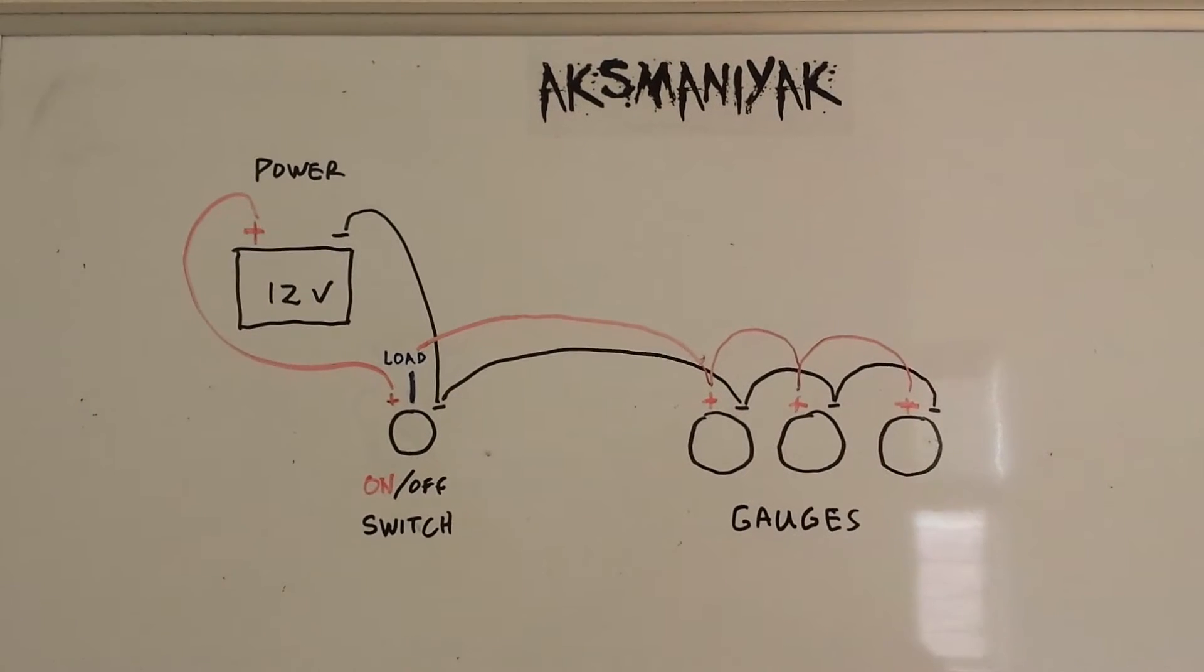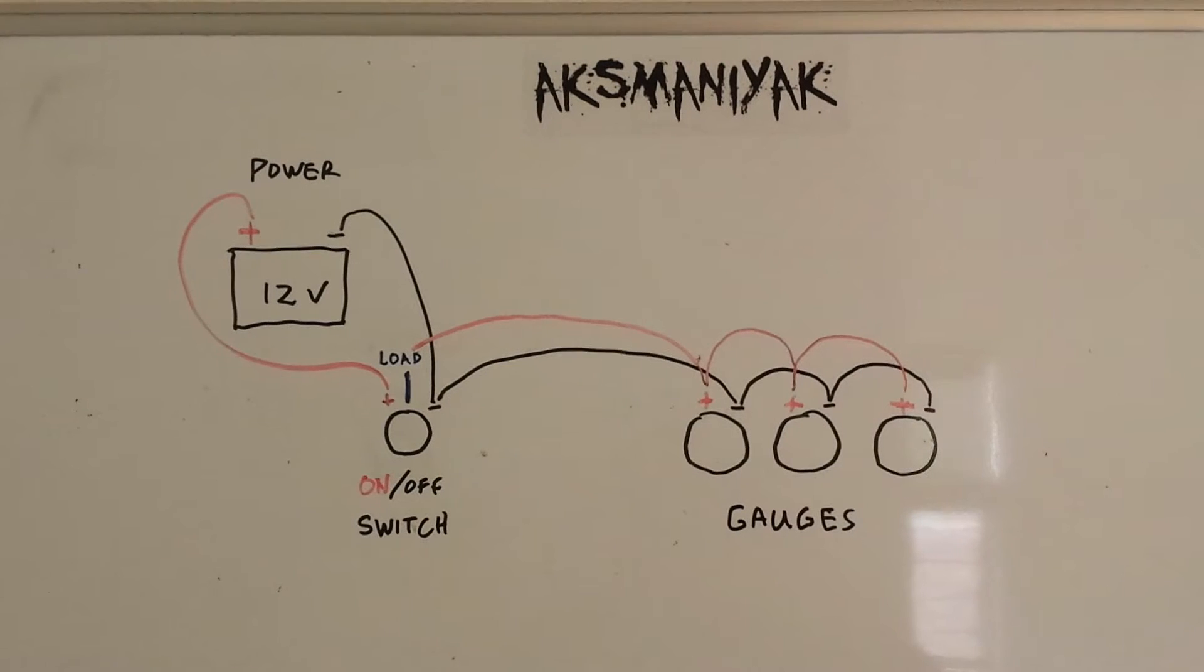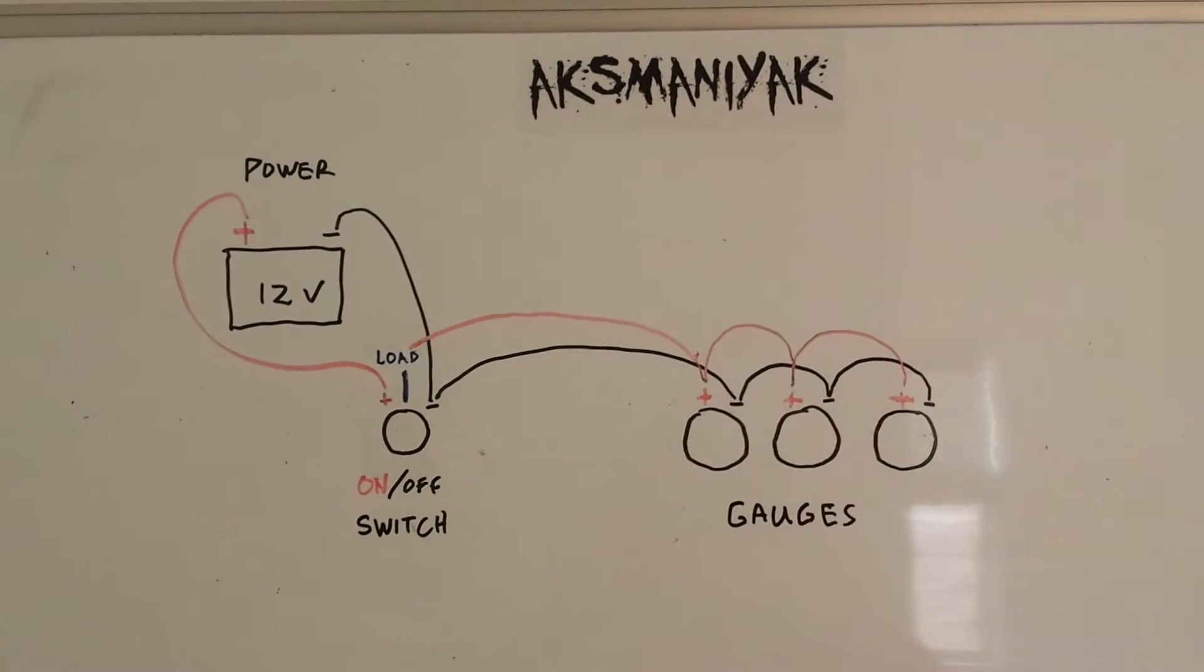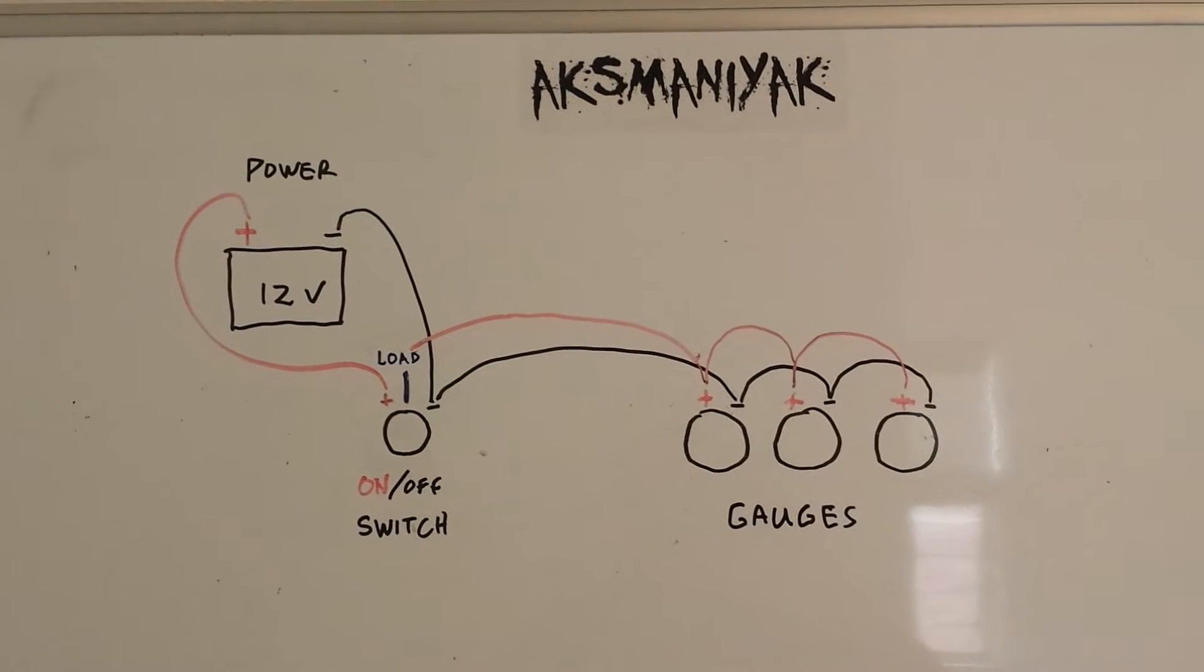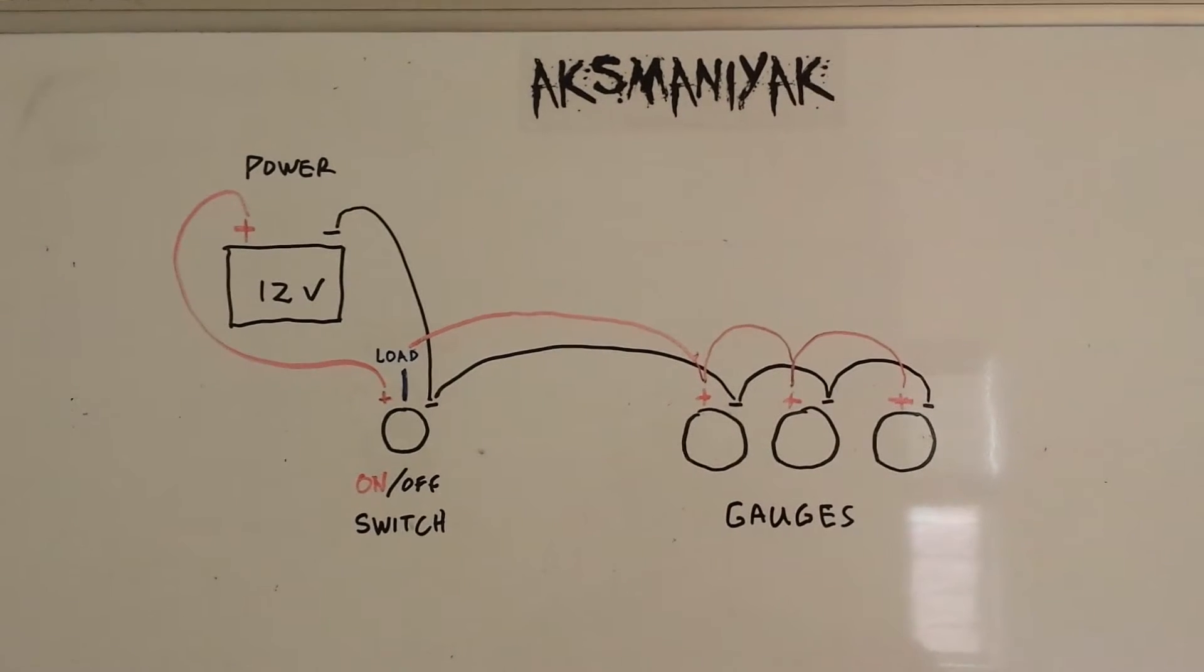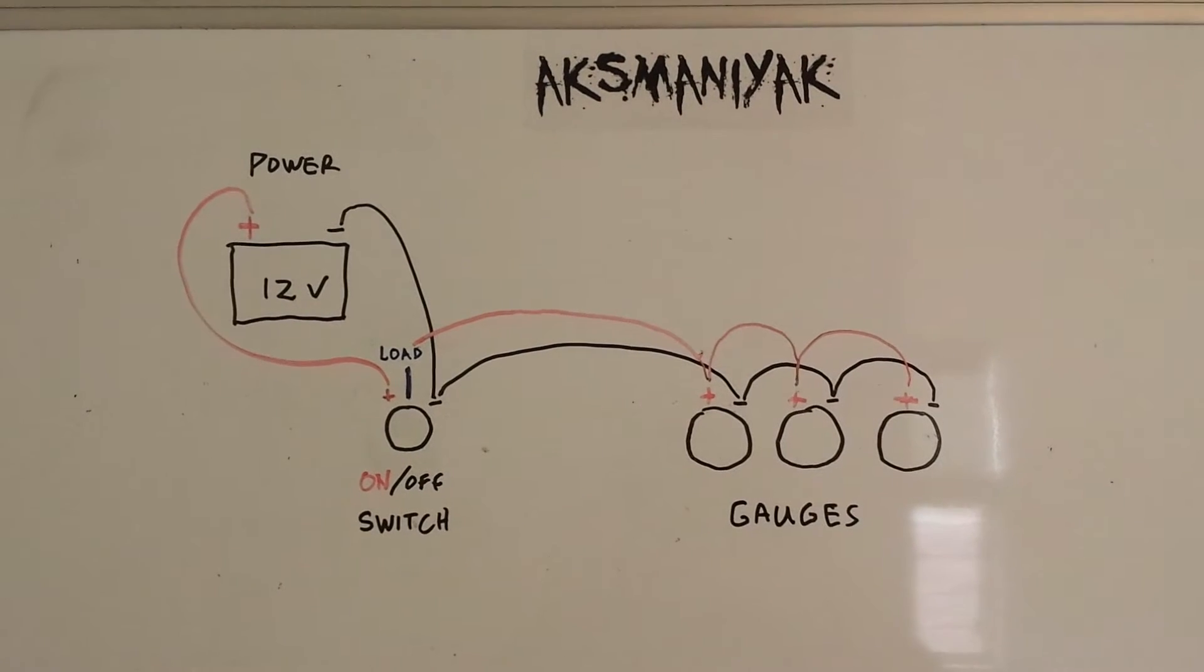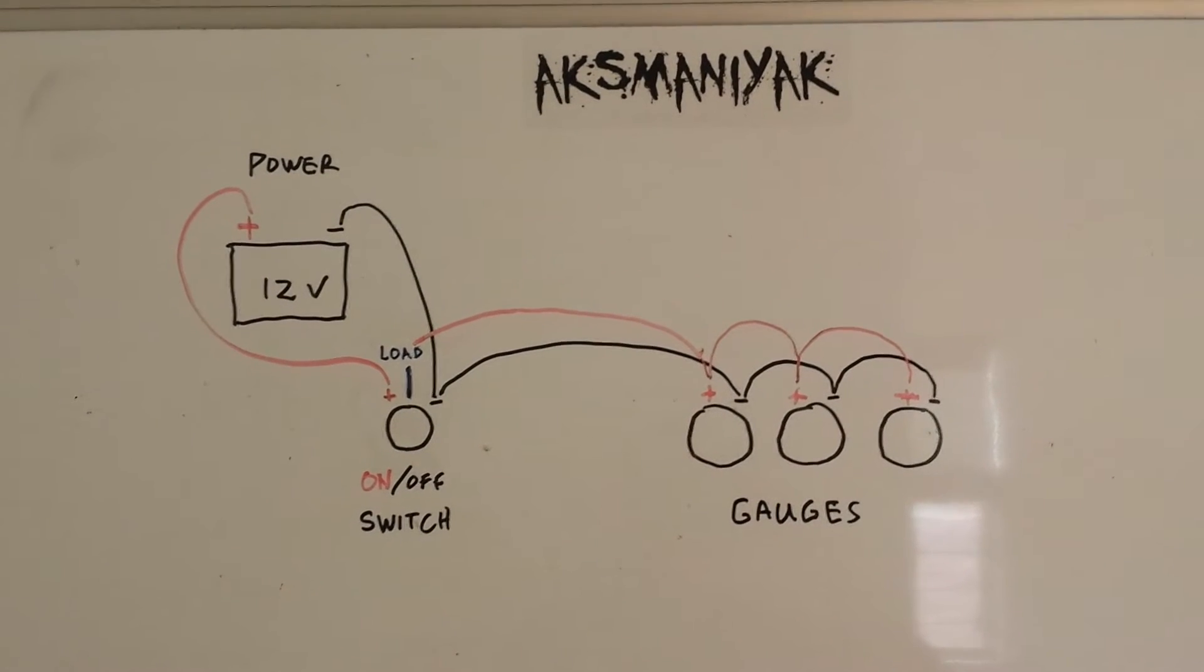The negative single terminal is hooked up to the negative terminal on the on-off switch, and the positive lead coming from the gauges goes to the center post or terminal, which is the load terminal for this circuit.